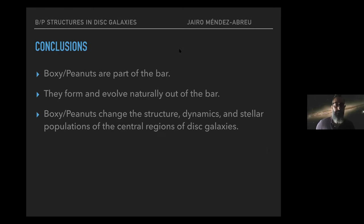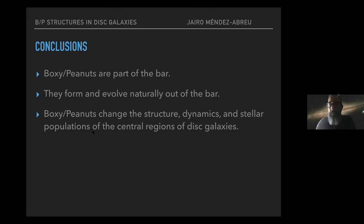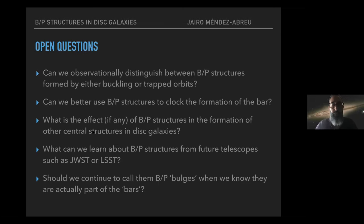In conclusion: boxy peanuts are part of the bar and form and evolve naturally out of the bar. Boxy peanuts have the ability to change the structure, dynamics, and stellar populations of the central region of galaxies. Therefore understanding these structures is important for understanding galaxy evolution in general. There are many open questions left for discussion.